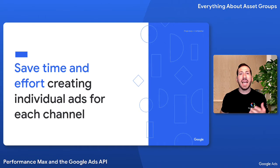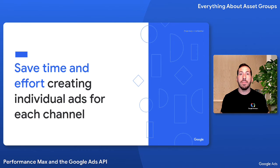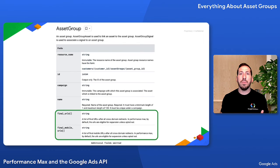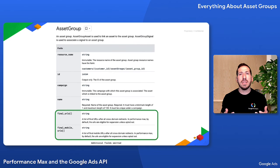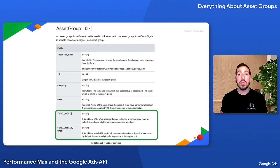Consider why you might want to use one versus many asset groups in a given campaign. Two fields on asset groups — final URL and final mobile URL — are defined at the ad level in other campaign types. Rather than thinking of each asset group as a container for assets, it may help to conceptualize and organize asset groups by goal — meaning to send traffic to one or more URLs to achieve the objectives you've defined in your campaign.